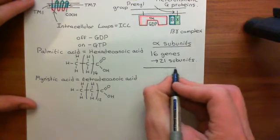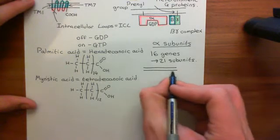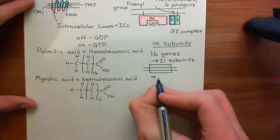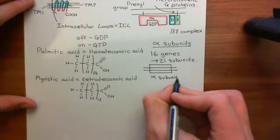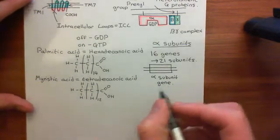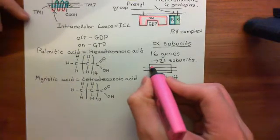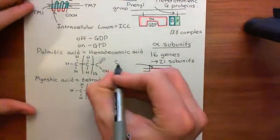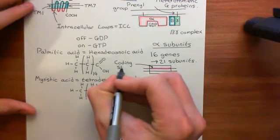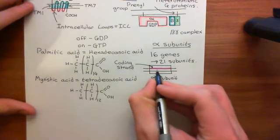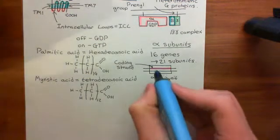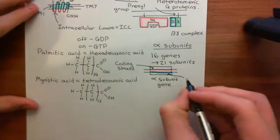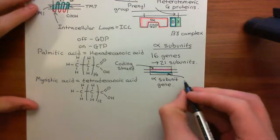Let me remind you of the central dogma of biology. These two lines represent a piece of double-stranded DNA, and let's say this region is a gene for some alpha subunit — this is an alpha subunit gene. One of the strands, the one I'm now colouring in purple, is the coding strand — the strand that RNA polymerase 2 will use to produce mRNA. The other strand, complementary to the coding strand and coloured in blue, is the non-coding strand, which RNA polymerase 2 does not use to make mRNA.